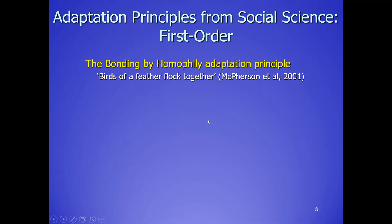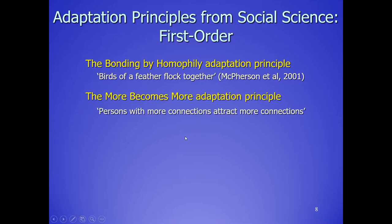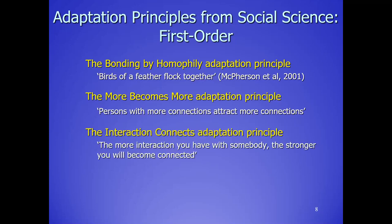Now I will show some that are more for the social science side. First: bonding by homophily — sometimes stated as 'birds of a feather flock together.' If you are similar, you are attracted to form stronger connections. Second: the 'more becomes more' adaptation principle, also called the Matthew effect or preferential attachment — persons with more connections attract more connections. Third: the interaction-connects principle — if you work, sing, or dance together with someone, there's a good chance the connection becomes stronger over time.